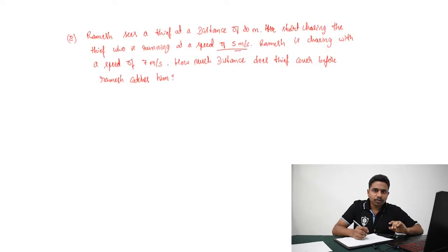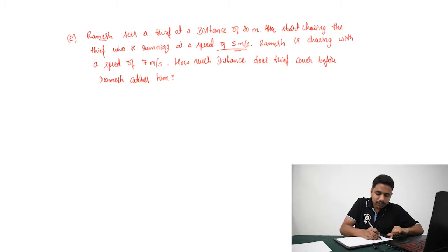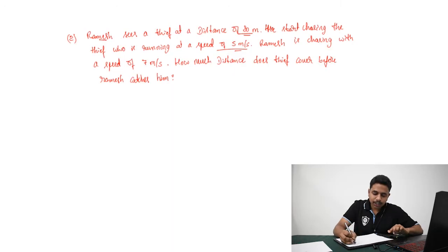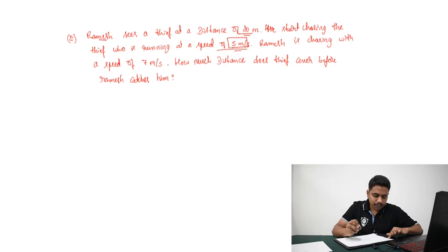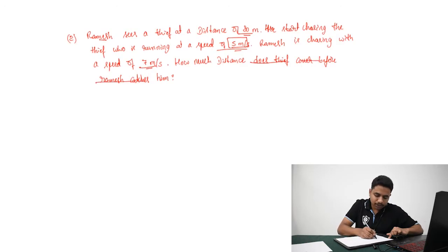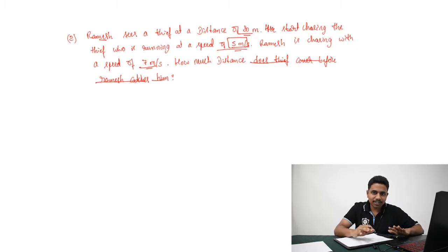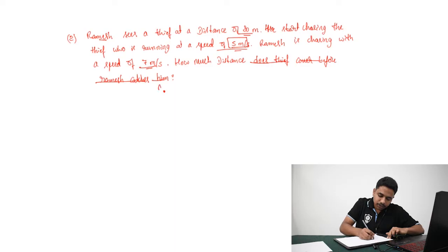Let's move to problem number two in speed, distance and time. The question says: Ramesh sees a thief at a distance of 80 meters and starts chasing. The thief is running at a speed of 5 meters per second and Ramesh is chasing at 7 meters per second. How much distance does the thief cover before Ramesh catches him? This is the famous thief and police problem.